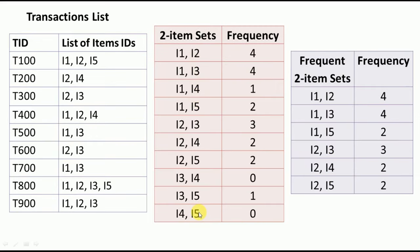For example, items I1 and I2 are present together here, a second time here, a third time here, and a fourth time here — so they were bought together 4 times. Similarly, I1 and I3 are present together 4 times. We need to identify all the frequencies for all 10 two-item sets in the same way.